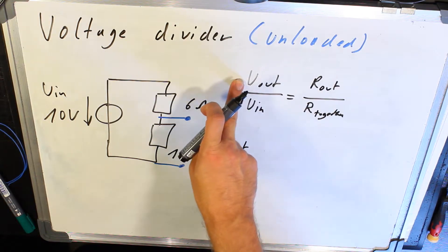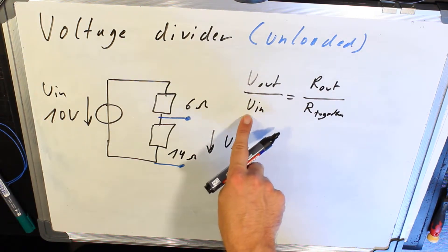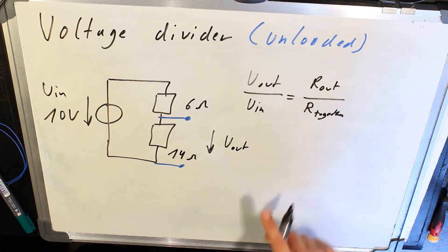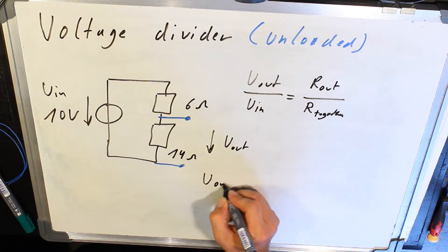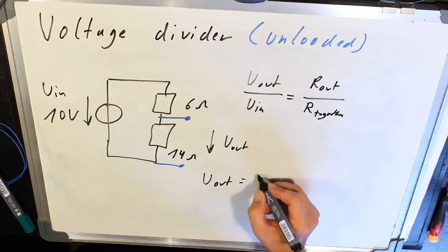Now I want to calculate U_out. So I multiply U_in on the other side. So I get U_out equals R_out